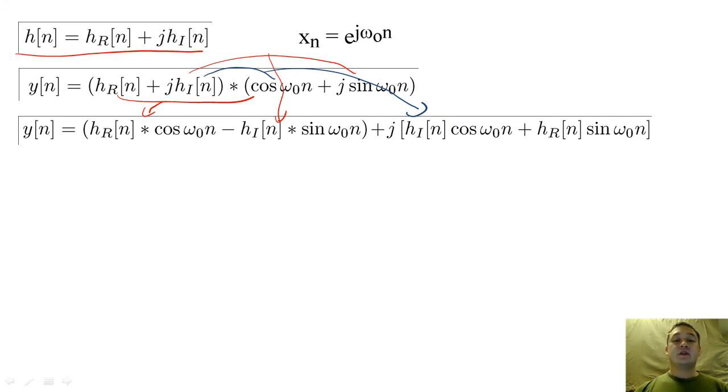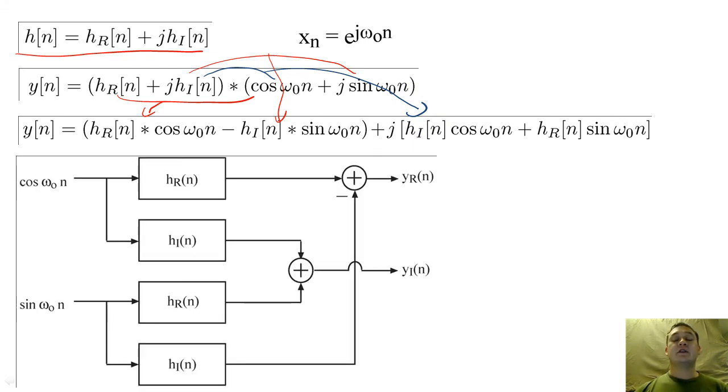This filter can also be constructed using only real-valued components. y of n can then be reconstructed by adding its imaginary and real parts back together.